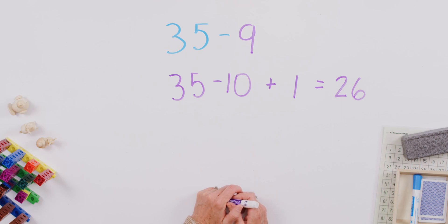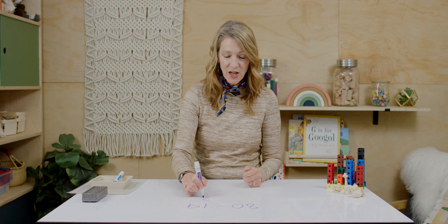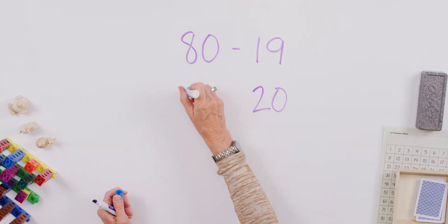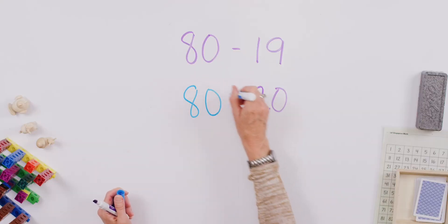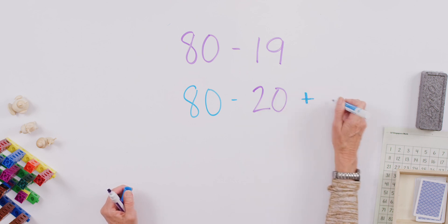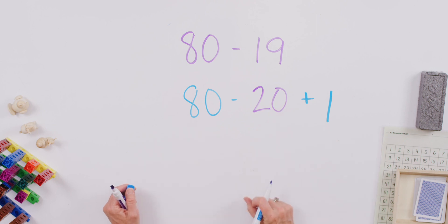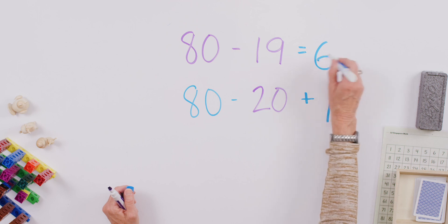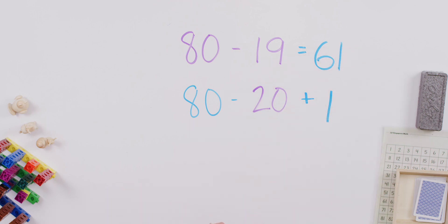Let's look at another one. How about this one? 80 minus 19. Is 19 close to a number in the tens? Yeah, it's so close to 20, isn't it? And again, we're talking about a difference of 1. So let's say 80 minus 20 plus 1. 80 minus 20 gives us? That's right, 60. And add one more. And you get 61 for your answer. See how this works so nicely?